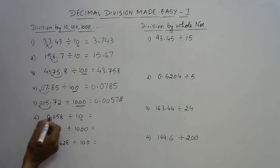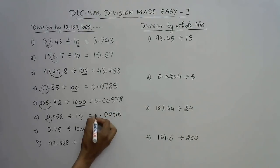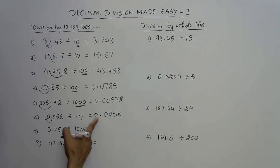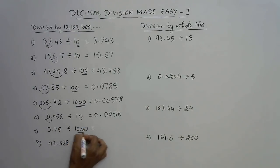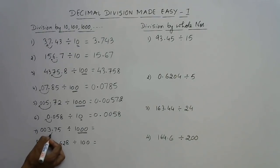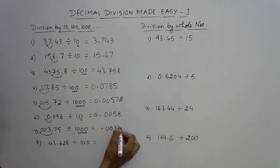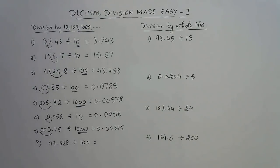When dividing and there is no digit in front of the decimal, we can always put a zero there. For example, with three zeros, the decimal moves three places left. With only one digit available, we put two zeros and then move three decimal places left, giving 0.00375 as the quotient. Again, since there is no digit before the decimal, we put a zero.